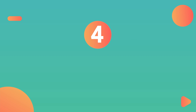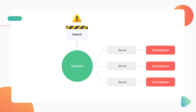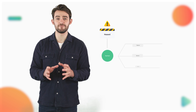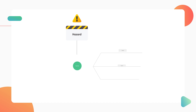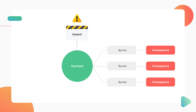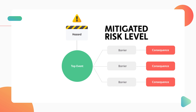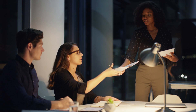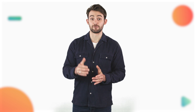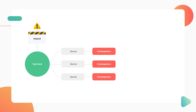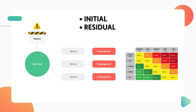Number four: initial versus residual. Initial and residual risk work together to form a complete picture of your risk. Initial risk measures the severity of consequences without any barriers, reflecting the worst-case scenario. Understanding this helps in preparing for the most severe outcomes and emphasises the importance of effective barriers. Residual risk takes into account the effectiveness of existing barriers, showing the mitigated risk level with effective barriers in place. This helps in assessing current risk management strategies and their effectiveness. When implementing a risk matrix into your bowtie diagrams, each consequence should be given both an initial and residual risk rating. Your initial risk rating will likely be significantly more severe than your residual risk rating if you have effective barriers in place.